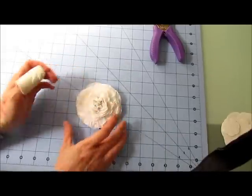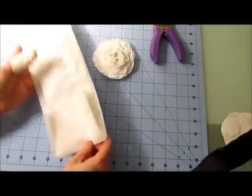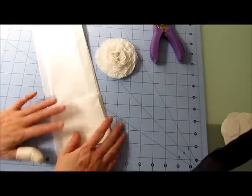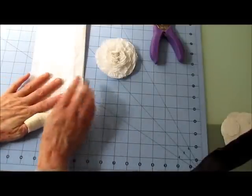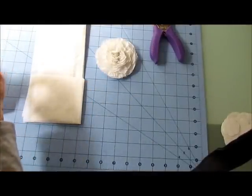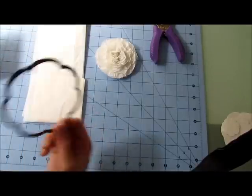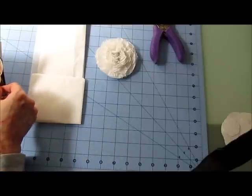So when I go to cut these out, what I do is I take the tissue paper and I fold it over a couple of times for the big ones. And then I just put my die right on there and plop it in the Big Shot.